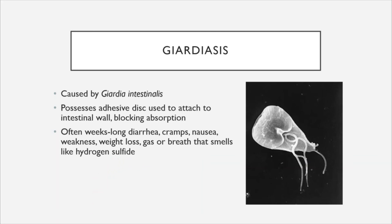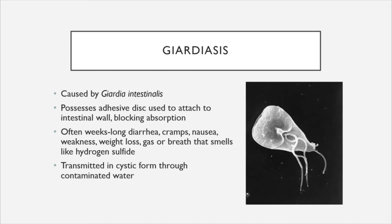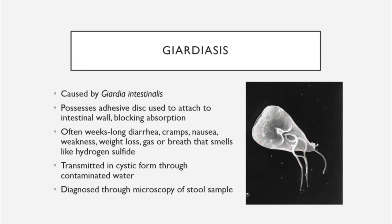Giardia is transmitted in cystic form, typically through contaminated water. It is the most common gastrointestinal parasite in the United States. It is typically diagnosed through microscopy of stool samples, and it is not uncommon to find Giardia in the stool samples of animals in veterinary settings in Arizona.